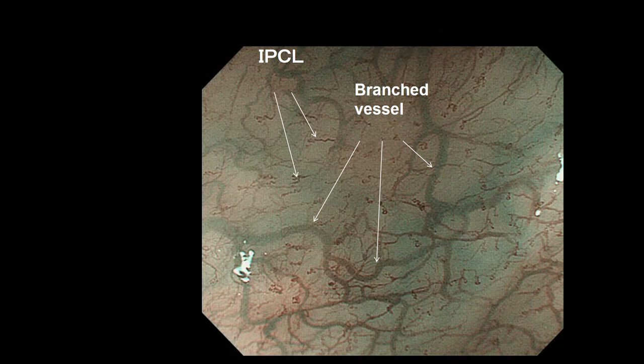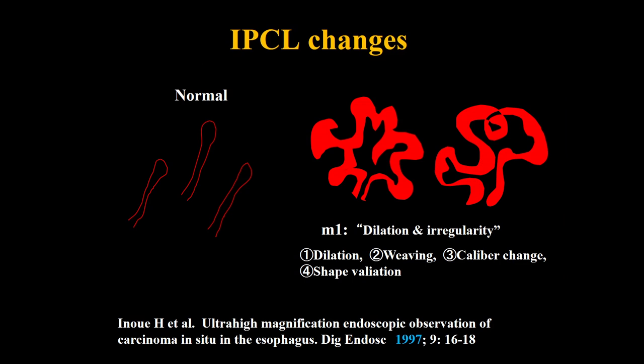The reason why we use IPCL as an indicator of atypia is this: in the case of carcinoma in situ, IPCL will change — dilation, curving, and caliber change occur. Finally, the shape of the IPCL shows lots of variation.